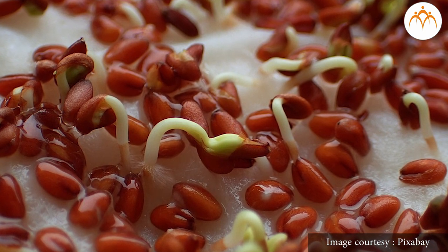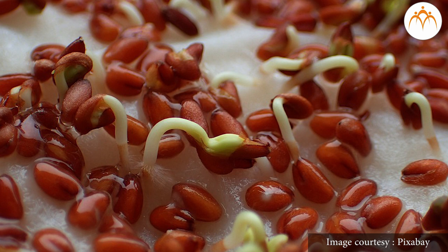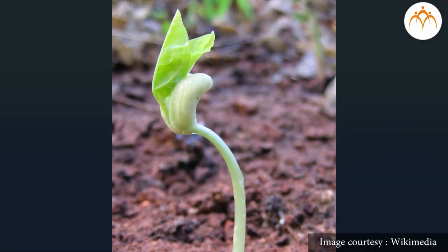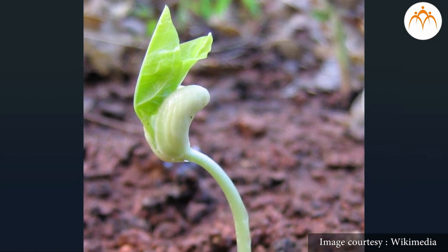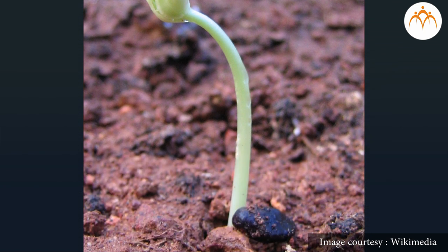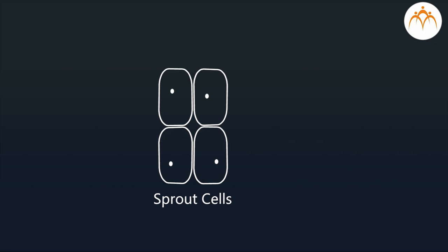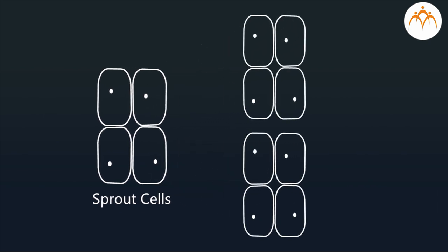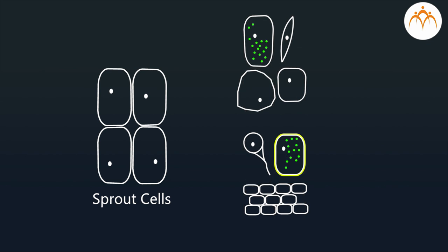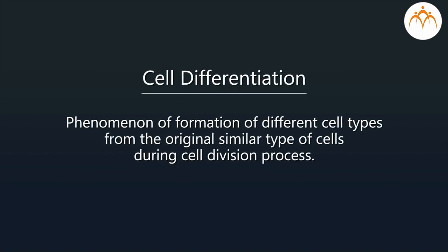Most of you have seen seeds germinate. When your mother soaks seeds like beans or peas in water, the white tiny outgrowth observed from the seed is termed as a sprout. If a similar seed is allowed to germinate and develop further in soil, the sprout would continue to grow in size and eventually form a tiny plant with roots, stem, and leaves. This means that the cells present in the sprout, which were similar to each other in structure and function, did not just undergo cell division or mitosis to produce more cells, but many of the newly formed cells have different structure and function compared to the original cells in the sprout. This phenomenon of formation of different cell types from the original similar type of cells during the cell division process is termed as cell differentiation.